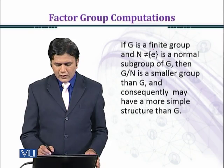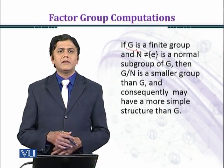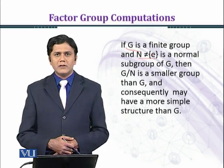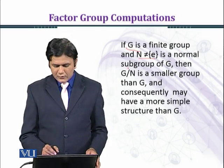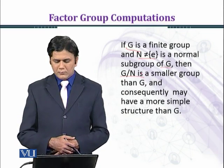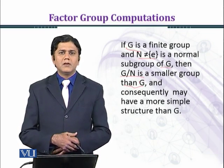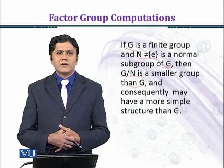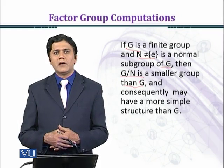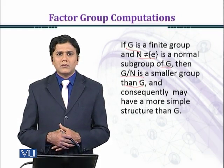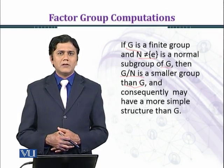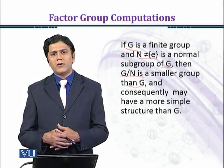If G is a finite group and N is not equal to singleton {e} — that is, N is a non-trivial proper normal subgroup of G — then G/N is a smaller group than G. Normal ہونے کا مطلب ہے left cosets اور right cosets equal ہیں، تو جب ہم G کا quotient N کے ساتھ لیں گے تو وہ well-defined ہو گا اور cosets کی addition یا multiplication بھی well-defined ہو گی۔